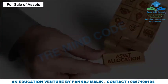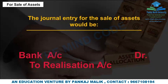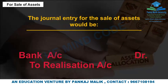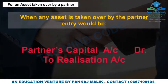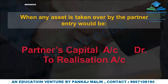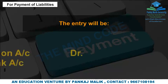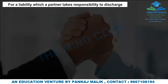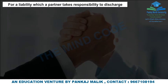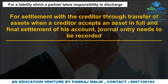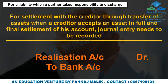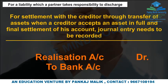For sale of assets, the appropriate journal entry is recorded. For an asset taken over by a partner, when any asset is taken over by a partner, the relevant entry is made to the partner's capital account. For payment of liabilities, the entry is recorded accordingly. For a liability which a partner takes responsibility to discharge, the liability account is debited and the partner's capital account is credited. For settlement with a creditor through transfer of assets, when a creditor accepts an asset in full and final settlement of his account, the corresponding journal entry needs to be recorded.